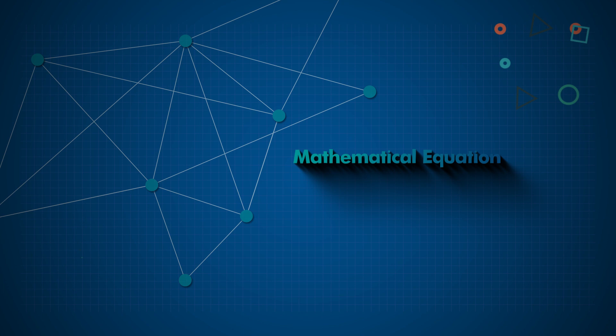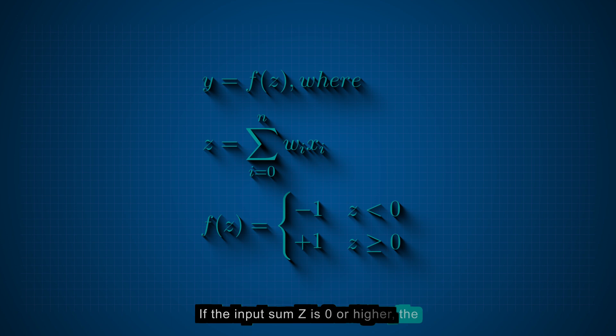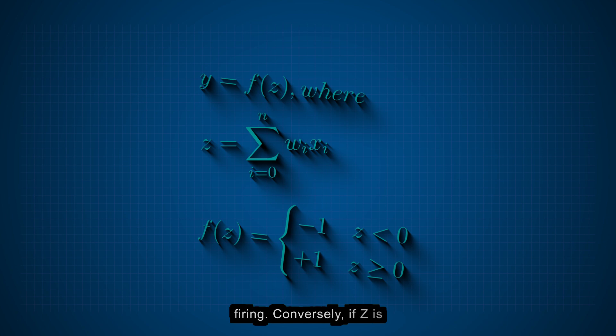Mathematically, the equation of the perceptron learning algorithm is this. If the input sum z is zero or higher, the output y is set to 1, symbolizing neuron firing. Conversely, if z is negative, the output y becomes negative 1, representing no firing.